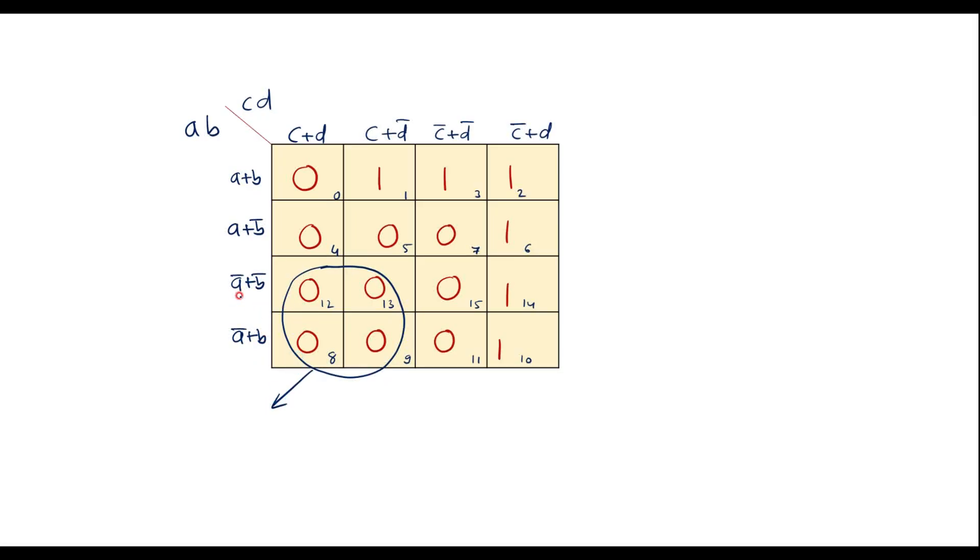So it covers these two rows. Here the common variable is a bar. It covers these two columns. Common variable is c. It is a bar plus c.